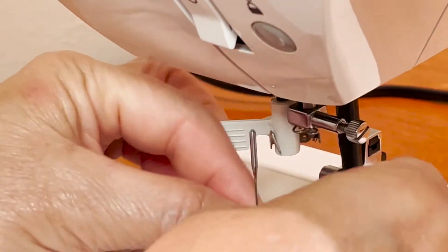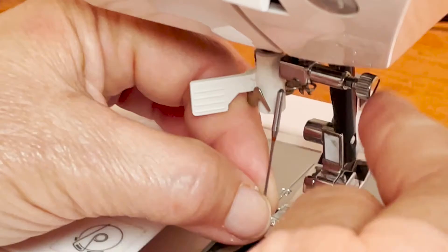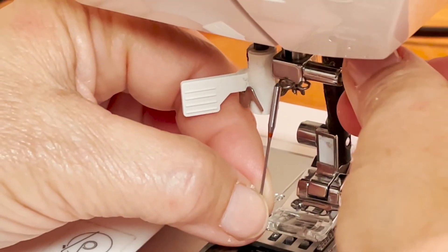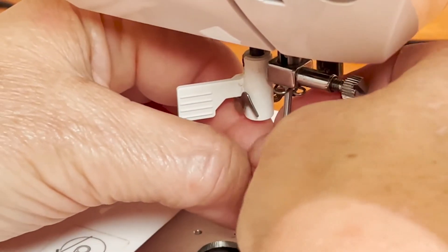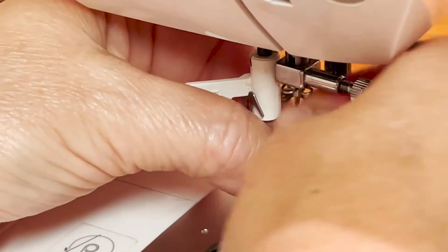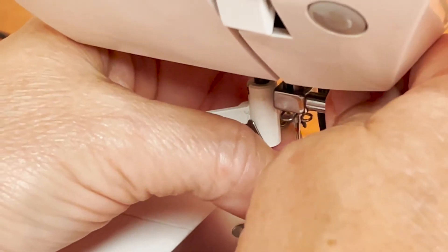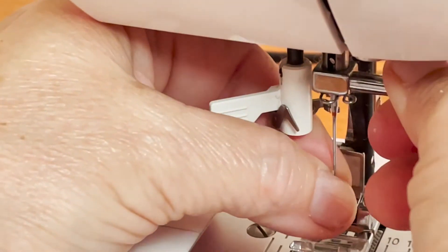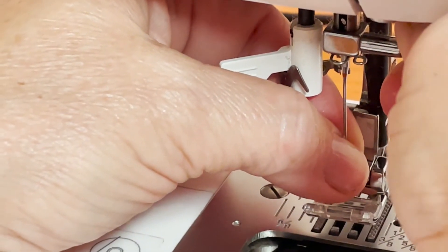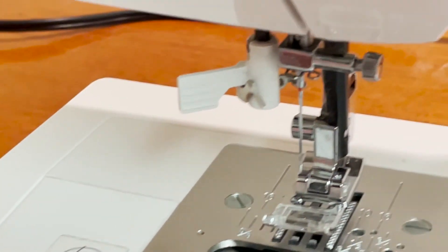We're going to put that in here. You're going to have a screw that you're going to untighten. You're going to push the needle up into the shaft as far as it will go, and then you're going to tighten that screw back down. Remember, the flat part is on the back of the machine.